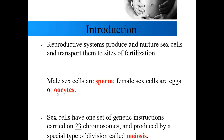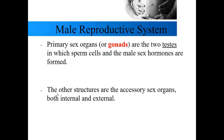Each sex cell, regardless of whether it's a sperm or an egg, will have one set of genetic chromosomes — one set of genetic instructions — carried on 23 chromosomes. They're going to be produced by a special type of cell division called meiosis. Meiosis only happens in sex cells. We'll start with the male reproductive system first.